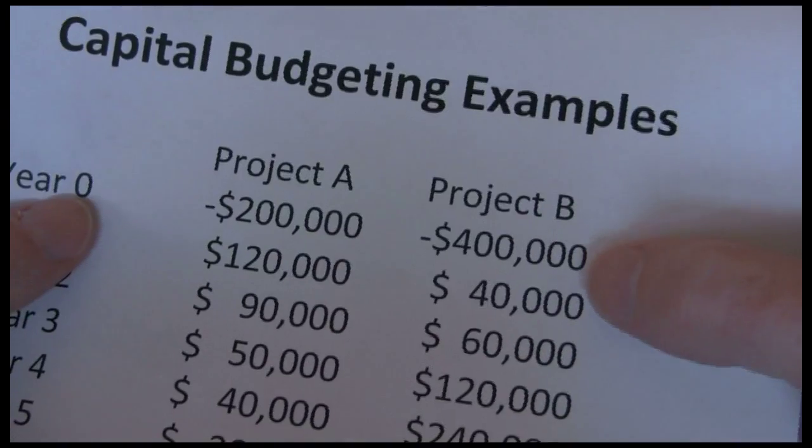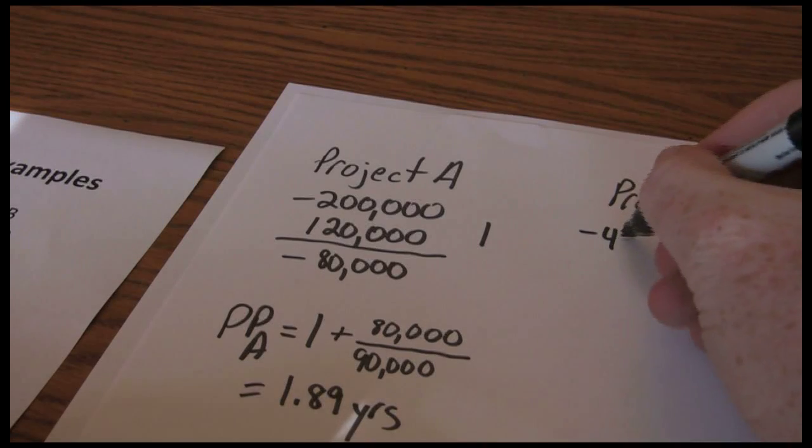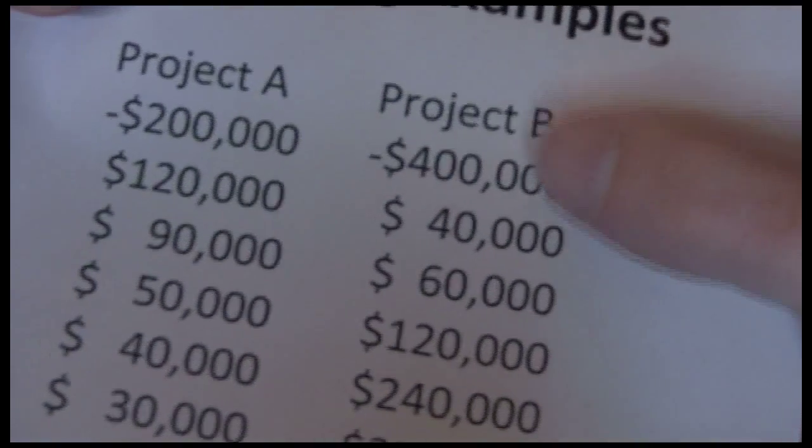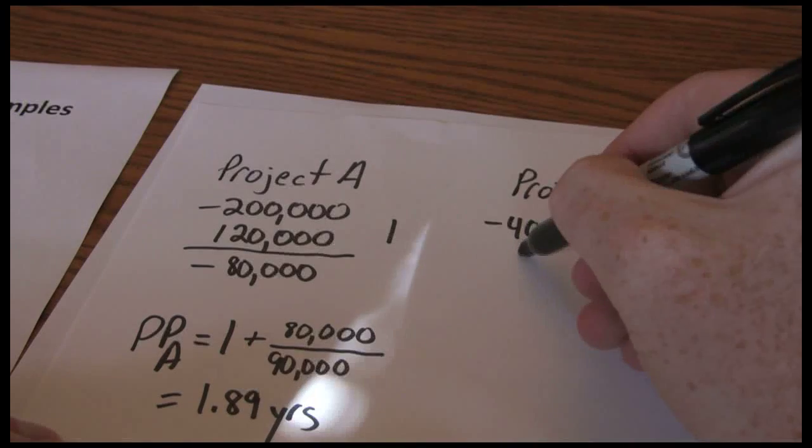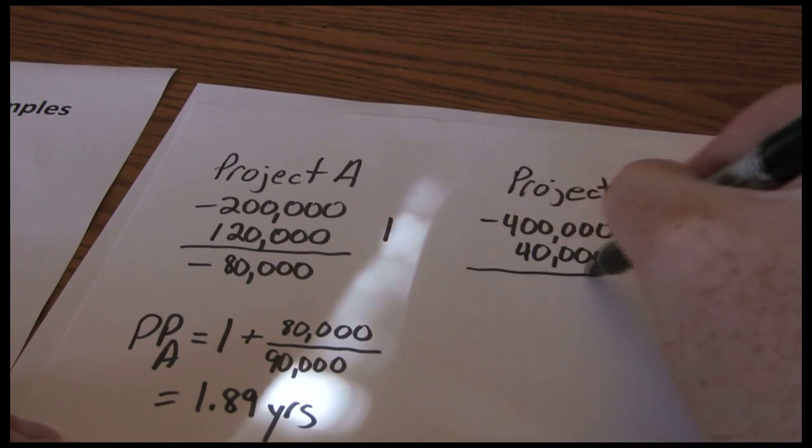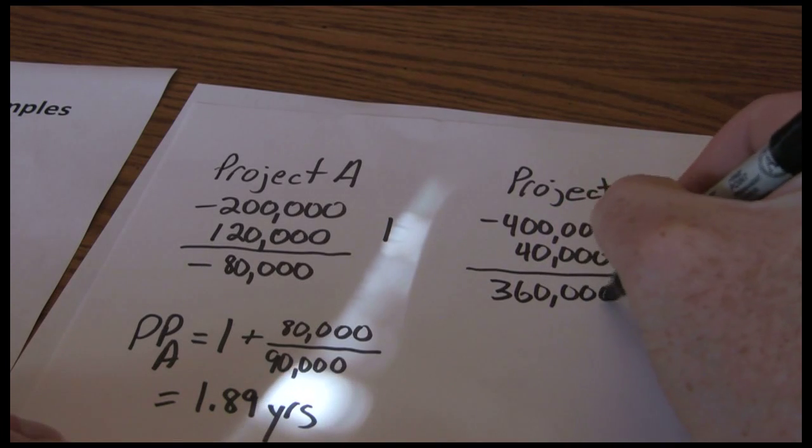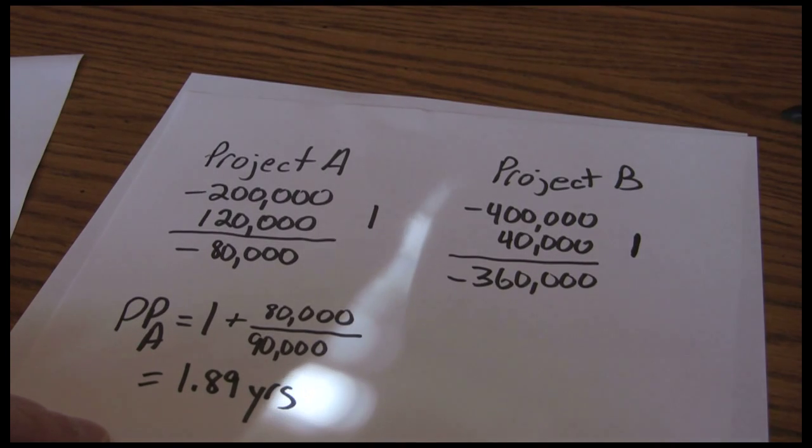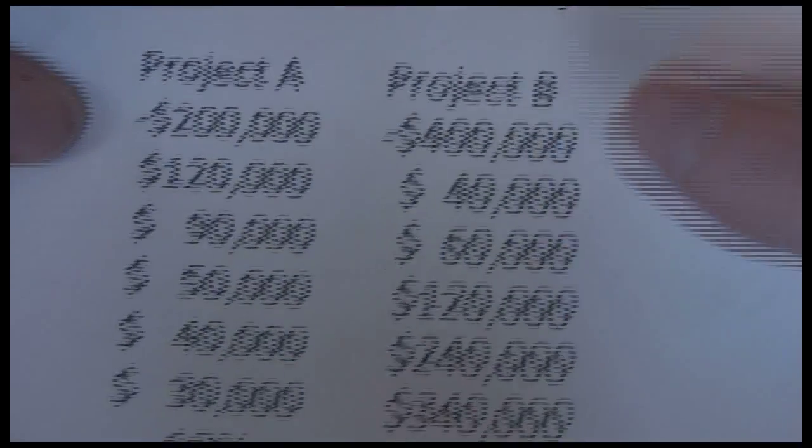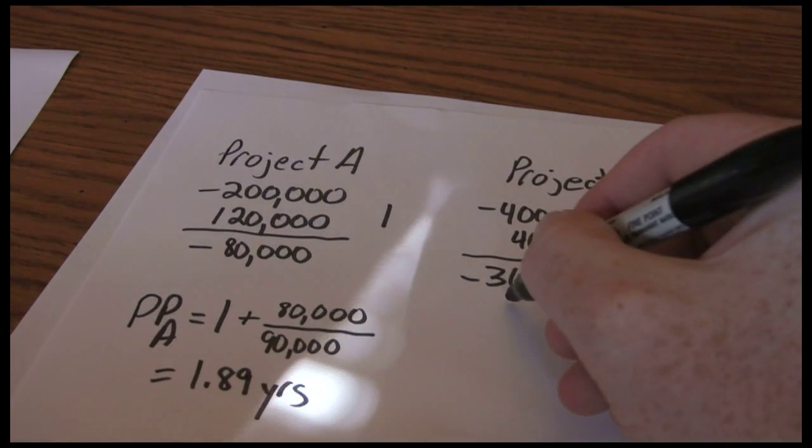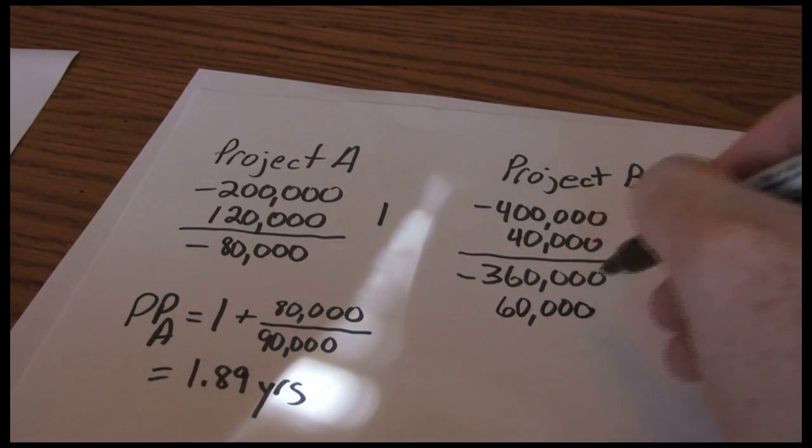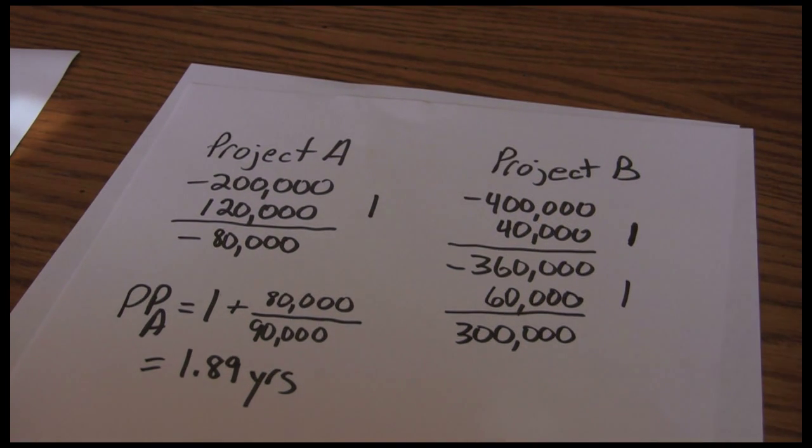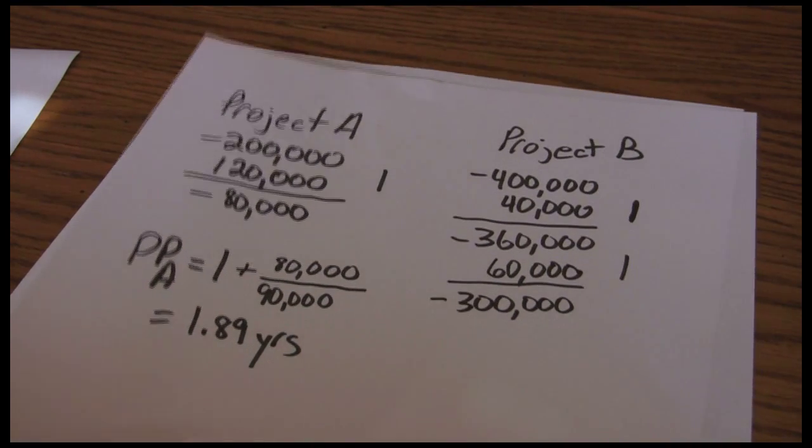We start out Project B, a $400,000 initial investment. So we spend $400,000 initially. In year one, we earn back $40,000. So after the end of year one, we still have $360,000 to pay back. Gone one year and we haven't paid anything back yet. Well, we paid some back, but we haven't paid back that initial investment yet. We go to year two. In year two, we're going to earn $60,000. It's going to be well short of our total $400,000. So we just add that back in. And we add another year to our count. We've gone two full years. And we still have $300,000 yet to recover.